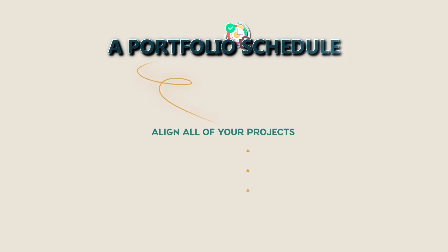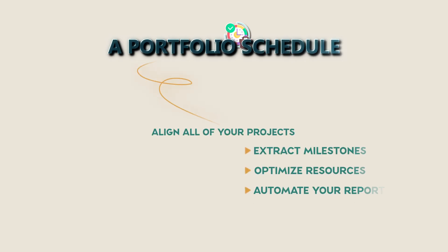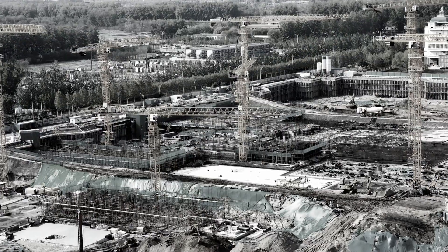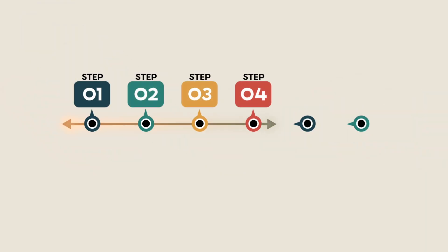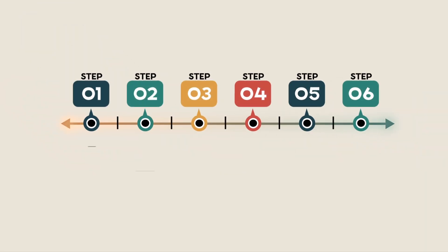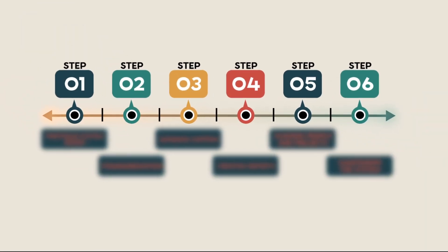In today's video, I'm going to show you how to set up and manage a construction portfolio schedule. A portfolio schedule helps you align all of your projects so you can extract milestones, optimize resources, or automate your reporting. This can come in handy whether you're working on three projects or 3,000. I've set up countless portfolio schedules across billions of dollars of projects globally, and I've distilled it down to six key steps. We're going to walk through these steps one by one in this video.